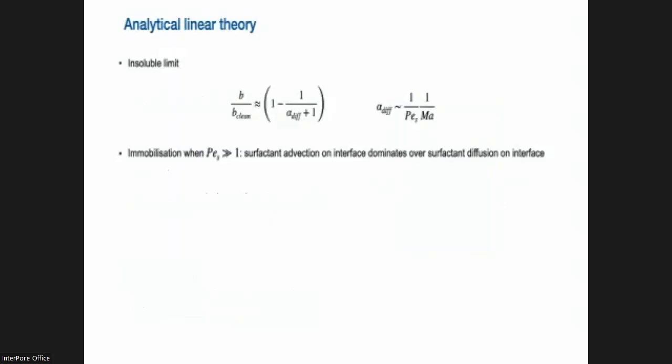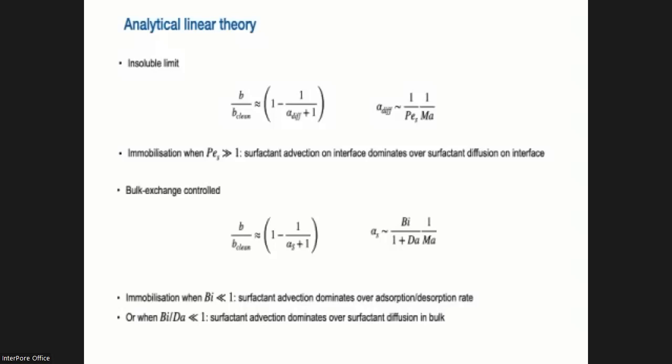So these numbers also plays a role in how much the slip length is reduced. It's not only the Marangoni number. So when we do some theory on this, I'm not going to go into details, but what we can do, we can rewrite basically the slip length as a function of a parameter which contains both the Marangoni number and the transport process. In this case, the Peclet number in the insoluble limit. So assuming there is no desorption adsorption, there's only activity on the interface, we get the Peclet number. So I'm not going to go into detail, but you can also look at the bulk exchange controlled, bulk exchange dominated system. And again, you get expression for the slip length that contains the Marangoni number, but also the transport related non-dimensional numbers. In this case, Biot number and Damköhler number, take into account the other timescales related to transport.